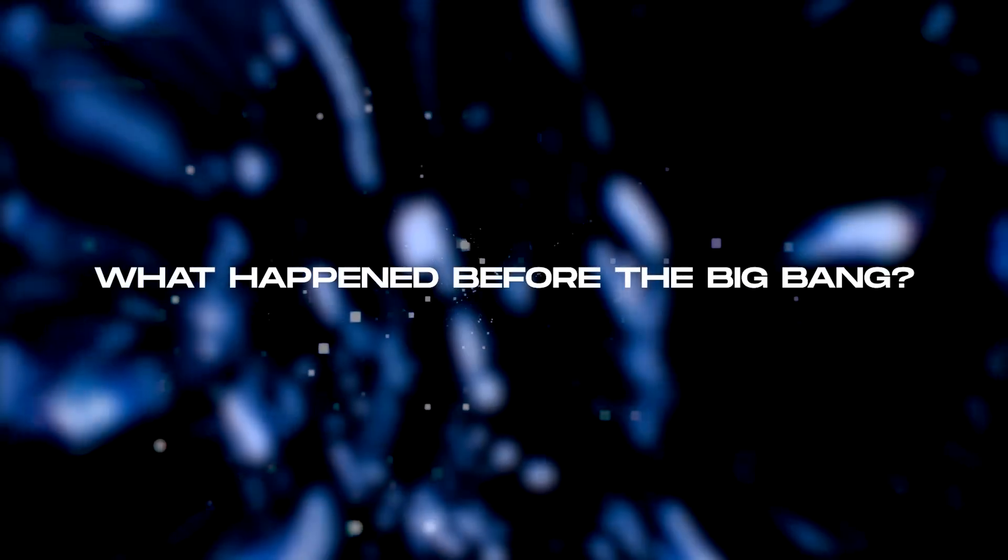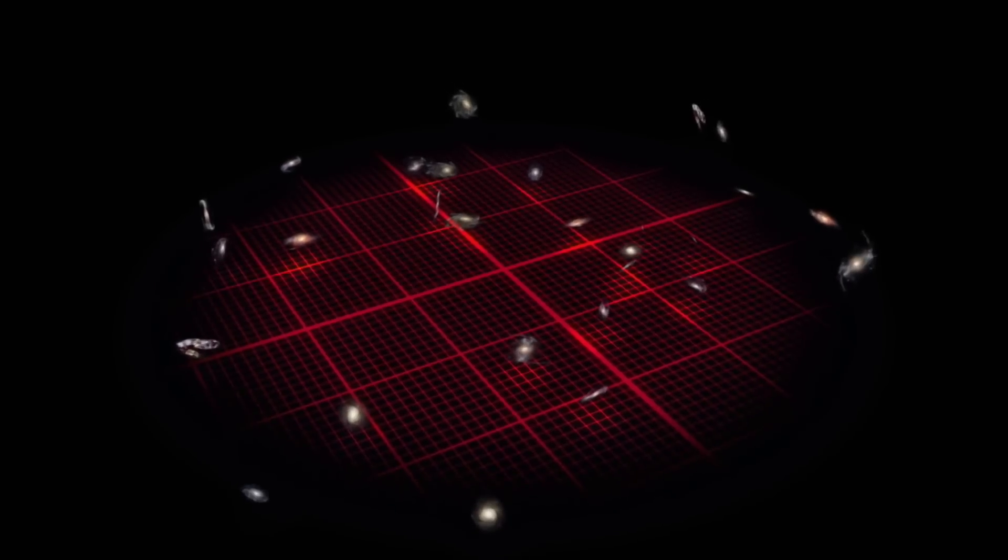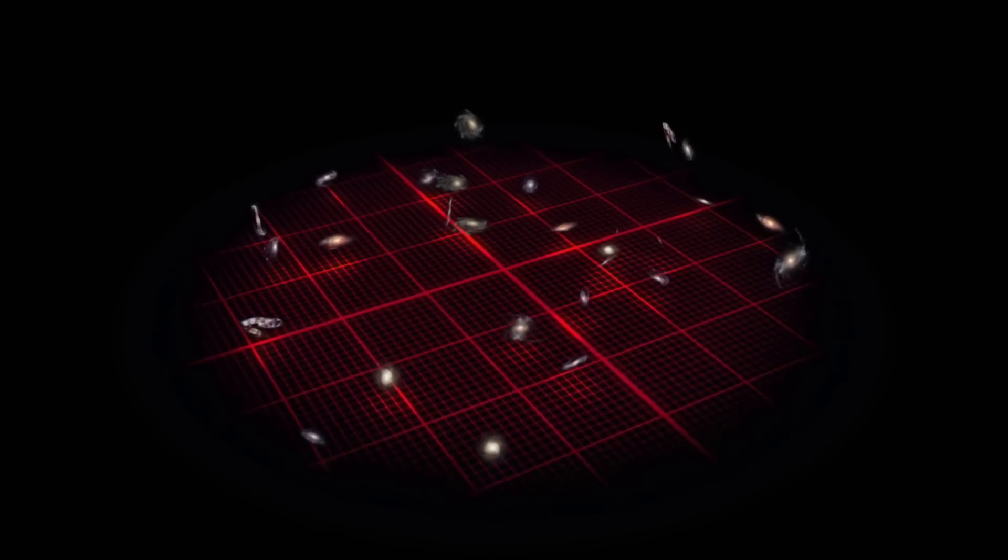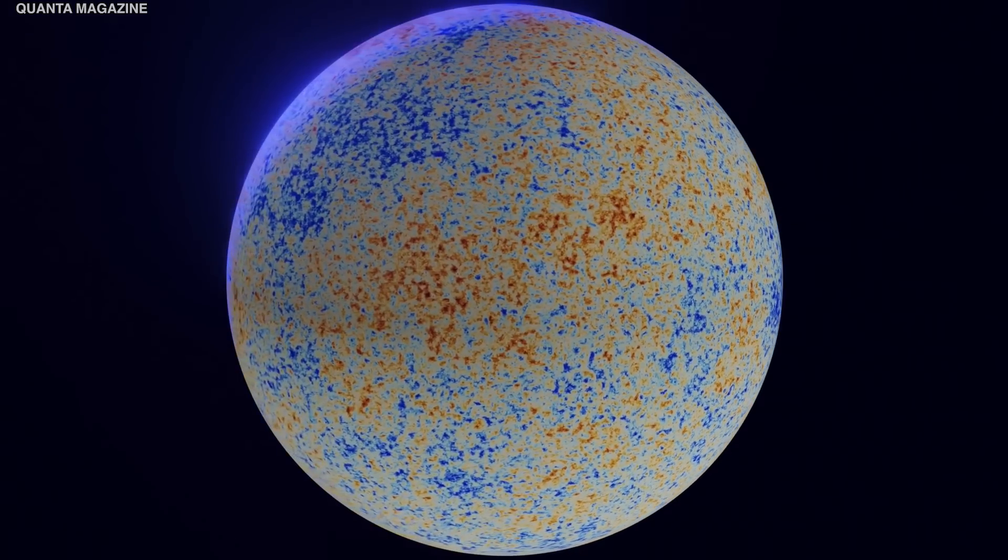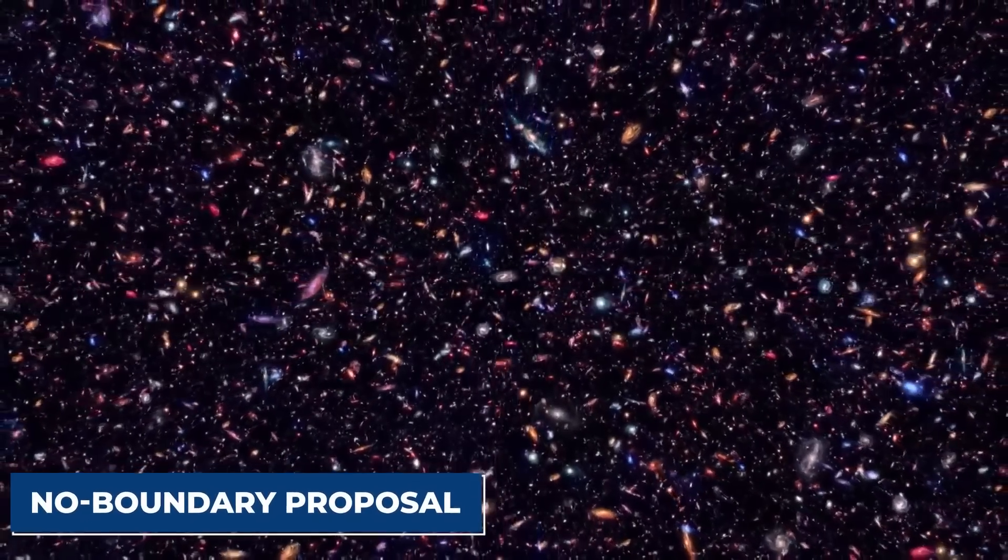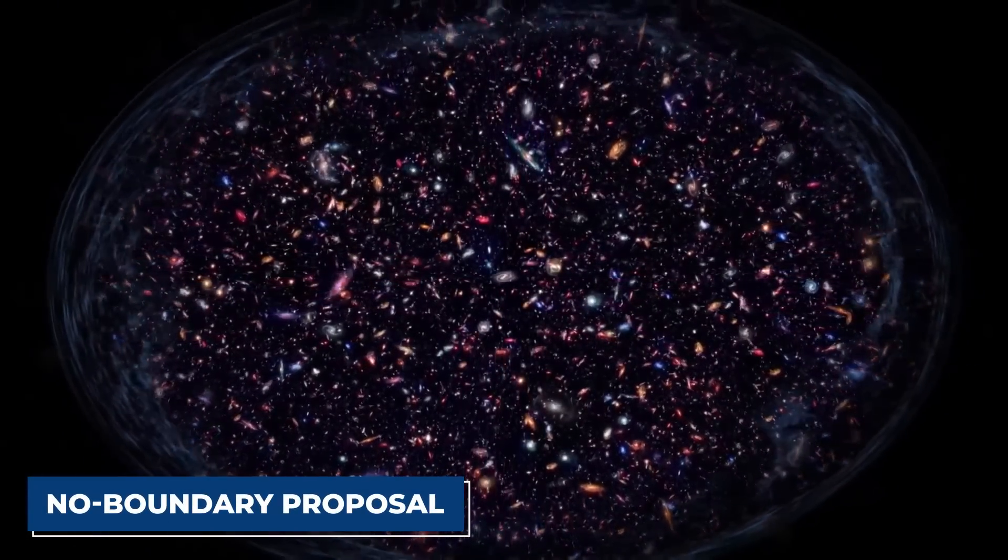So what happened before the Big Bang? Going by Lemaitre's model, we could be groping back in time indefinitely as we search for what took place before the Big Bang. But Hawking, in his brilliance, was able to rescue us from wandering aimlessly in the past. However, his solution may shock you. The professor proposed the no-boundary proposal with James Hartle.